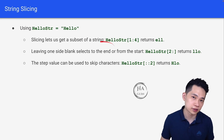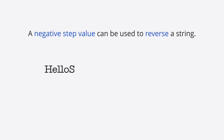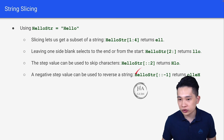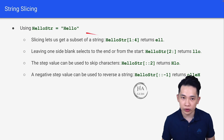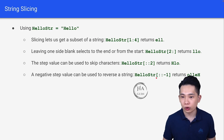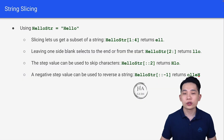Lastly, a negative step value can be used to reverse a string. For example, hello_string[::-1] returns 'olleH'. We use this quite often to reverse a string — just put [::-1] and the string will be reversed.